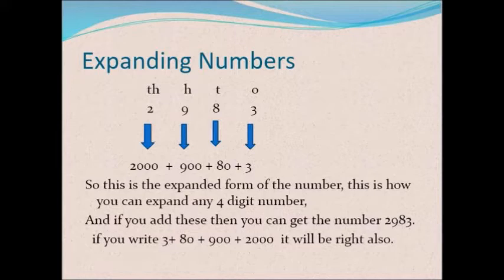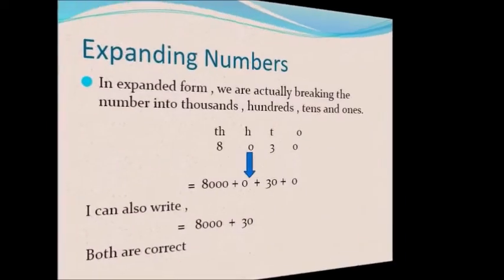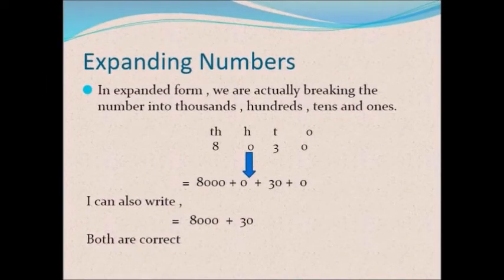This is how we can expand a four-digit number. If you add these numbers you get 2983. Note that we are moving from left to right, but you can also write from right to left — 3 + 80 + 900 + 2000 is also correct. In expanded form we are actually breaking the number into thousands, hundreds, tens, and ones.